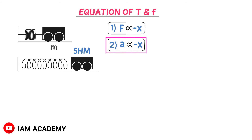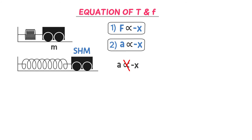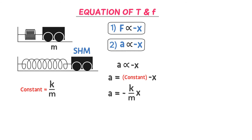Secondly, acceleration is always directly proportional to the displacement from the mean position and opposite in direction. We use this second property of SHM to derive the equation of time period. To remove the sign of proportionality, we put a constant. For a mass attached to a spring, the constant is K over M, giving us: A = −(K/M)·x. I call this Equation 1.